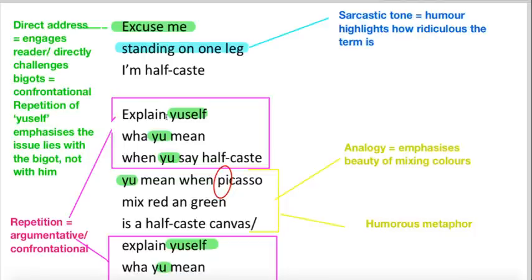The second line has this ridiculous idea of him standing on one leg. So it's a sarcastic tone, and it's humorous as well. This highlights how ridiculous the term Half-Caste is. I'm here is actually really important, because we immediately know that this is personal to him. I think that makes the message even more powerful, and the reader is more likely to listen because he is speaking from experience.